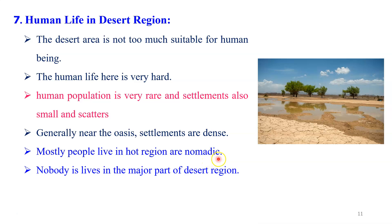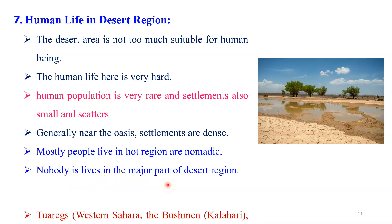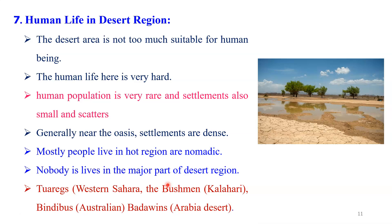The nomadic type of people that we observe in this area — nobody lives in the major part of the desert area. In this area, we observe the Tuaregs, Bushmen, Bindiva, and Bedouins. These are the people that we observe here. Specifically, the Tuaregs — this type of tribal people — you observe in the western Sahara. Whereas the Bushmen are observed in the Kalahari desert. In Australia, we have the Bindiva tribal people. And lastly, in the Arabian desert we have Bedouins.